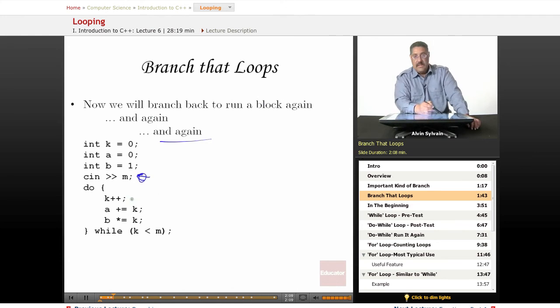We're going to increment k using the increment operator. We're going to add that new value of k to a. We're going to multiply b by that value, and then if k, our counter, is less than m that was entered, we will go back and run this block again.